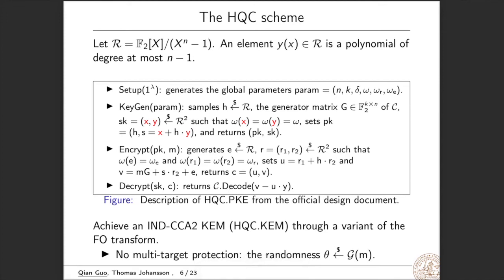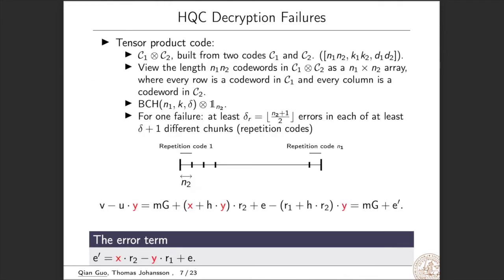Actually, HQC also gives an IND-CPA to CCA KEM called HQC.KEM through a variant of the Fujisaki-Okamoto transform. Note that there is no multi-target protection for this HQC KEM because the randomness theta is generated from a hash of m.